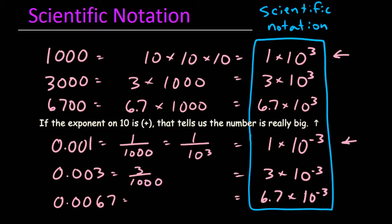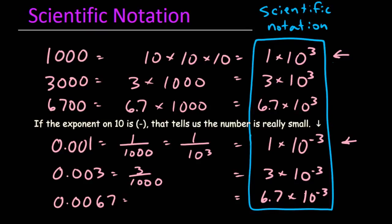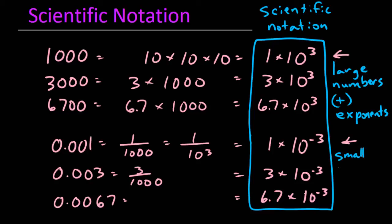If the exponent on 10 is positive, that tells us we're dealing with a really big number, and if the exponent on 10 is negative, that tells us we're dealing with a really small number. It's as simple as that. We don't need to know whether to move the decimal place left or right — just remember that really big numbers have positive exponents, and really little numbers have negative exponents.